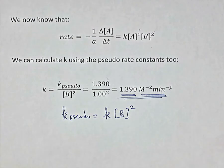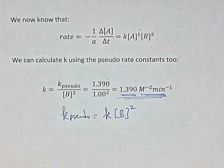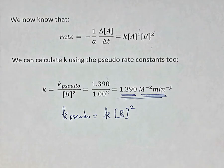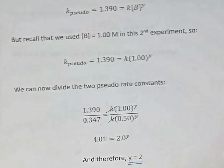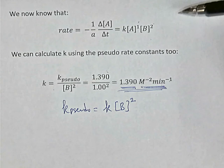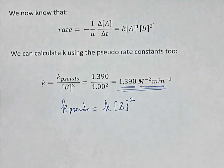In summary, for a reaction with more than one reactant, we flood the system with respect to one reactant so its concentration is held constant, then use graphical analysis to find the order of the other reactant and the pseudo-rate constant. We repeat the experiment with a different concentration of the flooded reactant to obtain a second pseudo-rate constant, take their ratio to find the order of the flooded reactant, and then use that order, its concentration, and the pseudo-rate constant to calculate the actual rate constant of the reaction.